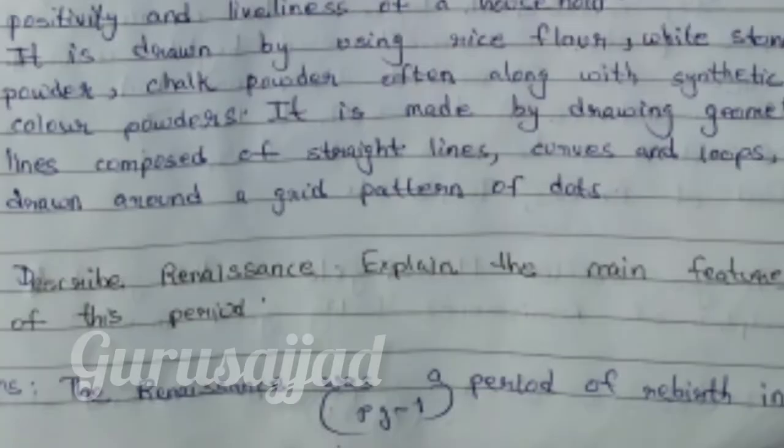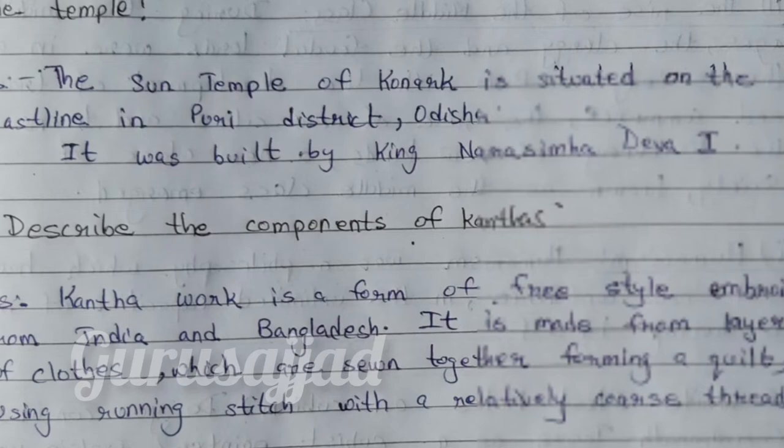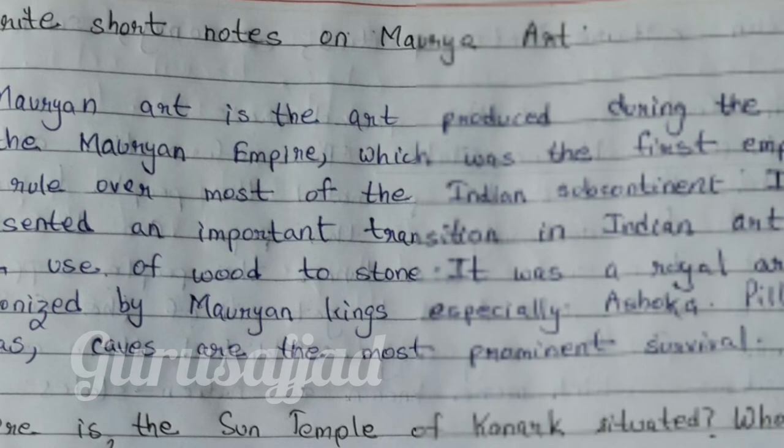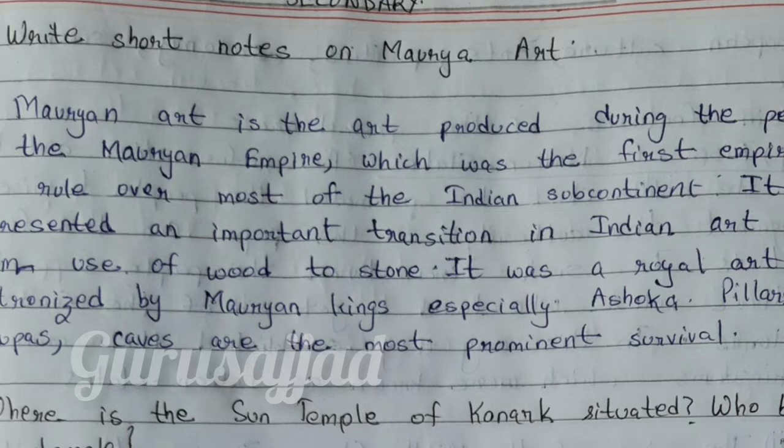Question number 1: Write short notes on Maurya art. Answer: Maurya art is the art produced during the period of the Maurya Empire, which was the first empire to rule over most of the Indian subcontinent. It represented an important transition in Indian art from the use of wood to stone. It was a royal art patronized by Maurya kings, especially Ashoka. Pillars and caves are the most prominent survivals.